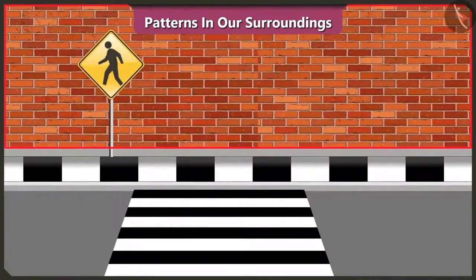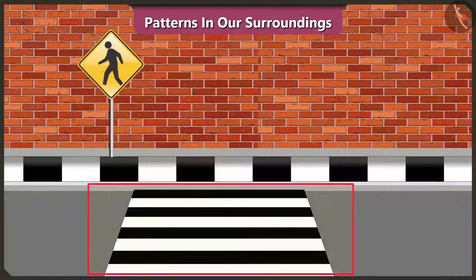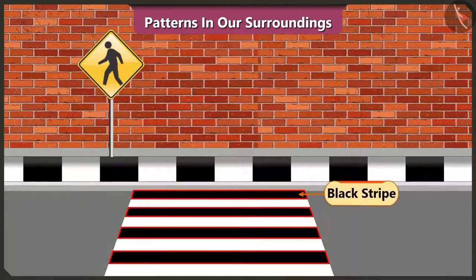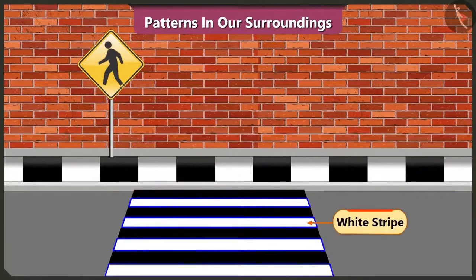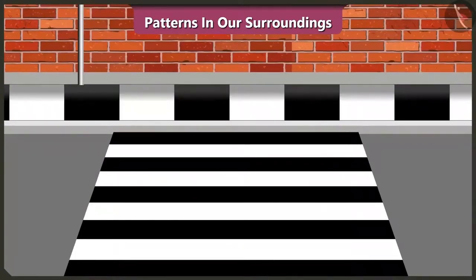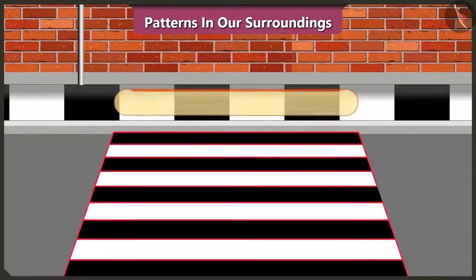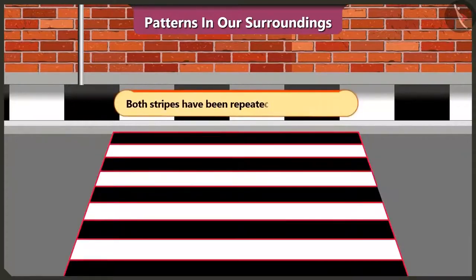Vinny, look at this wall — it has a pattern made of bricks. Now look at this zebra crossing: it has a pattern of black and white stripes. The pattern has black, white, black, white lines — both black and white color lines have been used repeatedly.